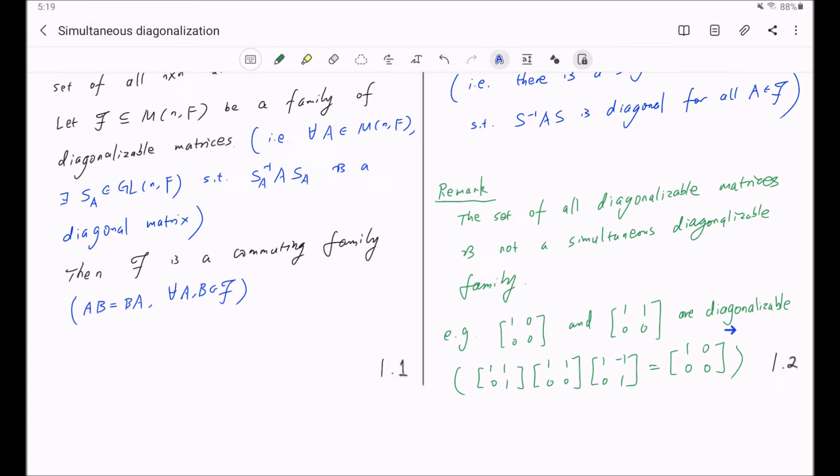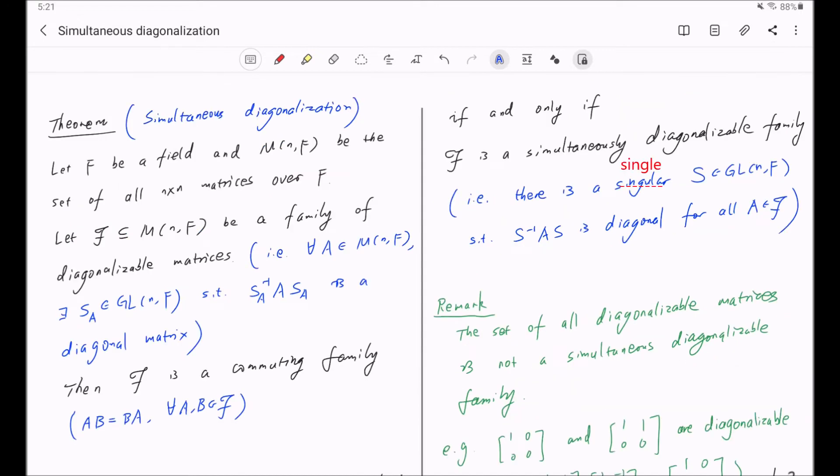But they are not simultaneously diagonalizable. Namely, you cannot find just one invertible matrix that diagonalizes both of them simultaneously. That is because of this theorem. Those two matrices do not commute with each other, so they do not form a commuting family. As a result by this theorem, they do not form a simultaneous diagonalizable family.